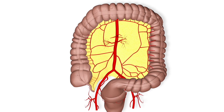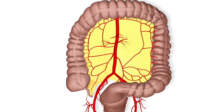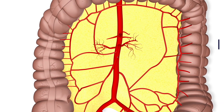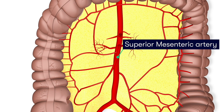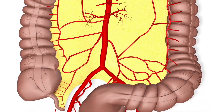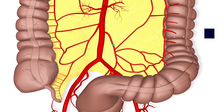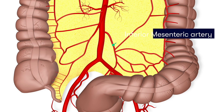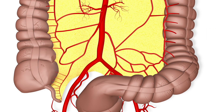Looking at the blood supply to the colon and rectum, starting with the arterial supply first. The majority of the colon receives its blood supply via branches of the superior mesenteric artery, which supplies the proximal two-thirds of the colon. Then we have the inferior mesenteric artery, which supplies the distal one-third of the colon including the upper two-thirds of the rectum.